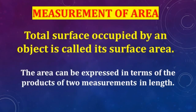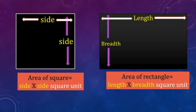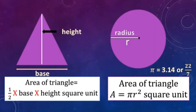Next is measurement of area. The total surface occupied by an object is called its surface area. We can measure area by two methods — the formula method and the graphical method. If an object has a definite length and width, we use the formula. If there is no definite shape, we use the graphical method. For a square, area equals side × side. For a rectangle, area equals length × breadth. Area is the multiplication of two sides.